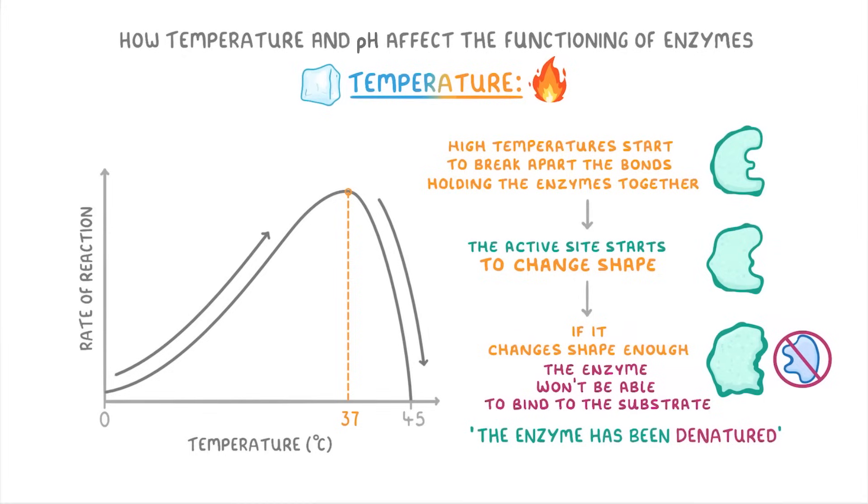So in this case, the enzyme would become denatured at around 45 degrees. And at that point, the damage is permanent. So even if you lower the temperature back down, the enzyme won't start working again.